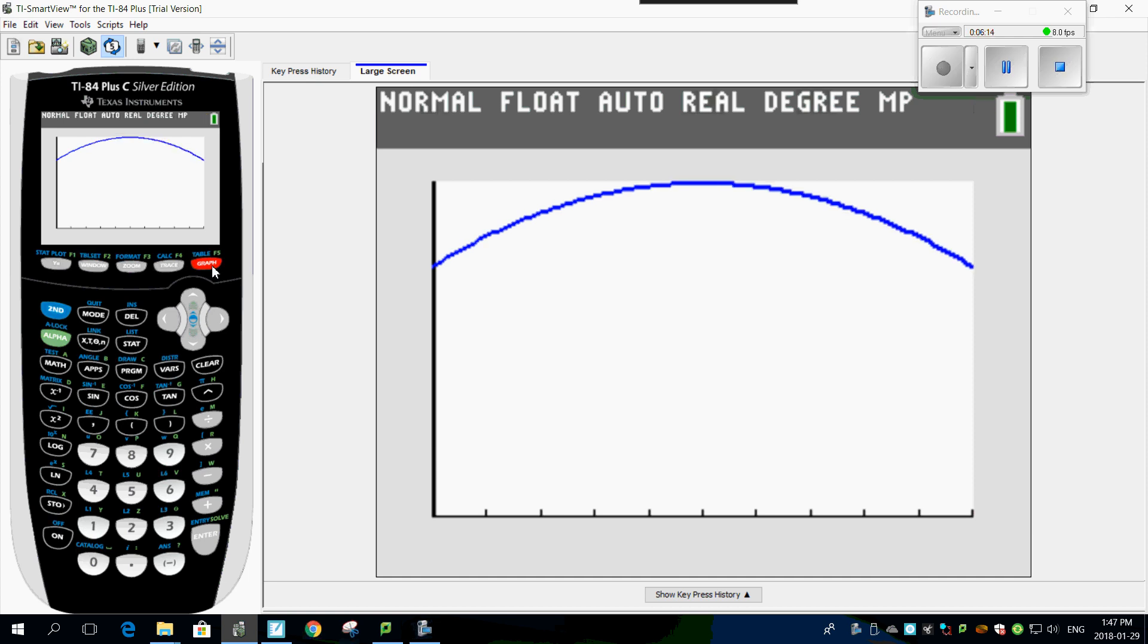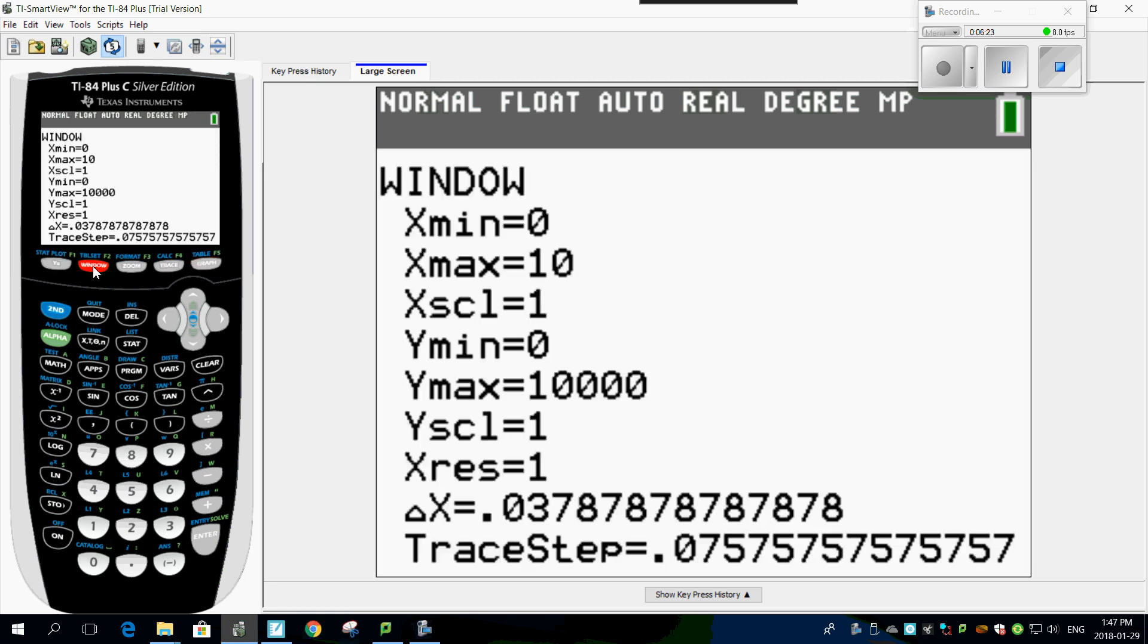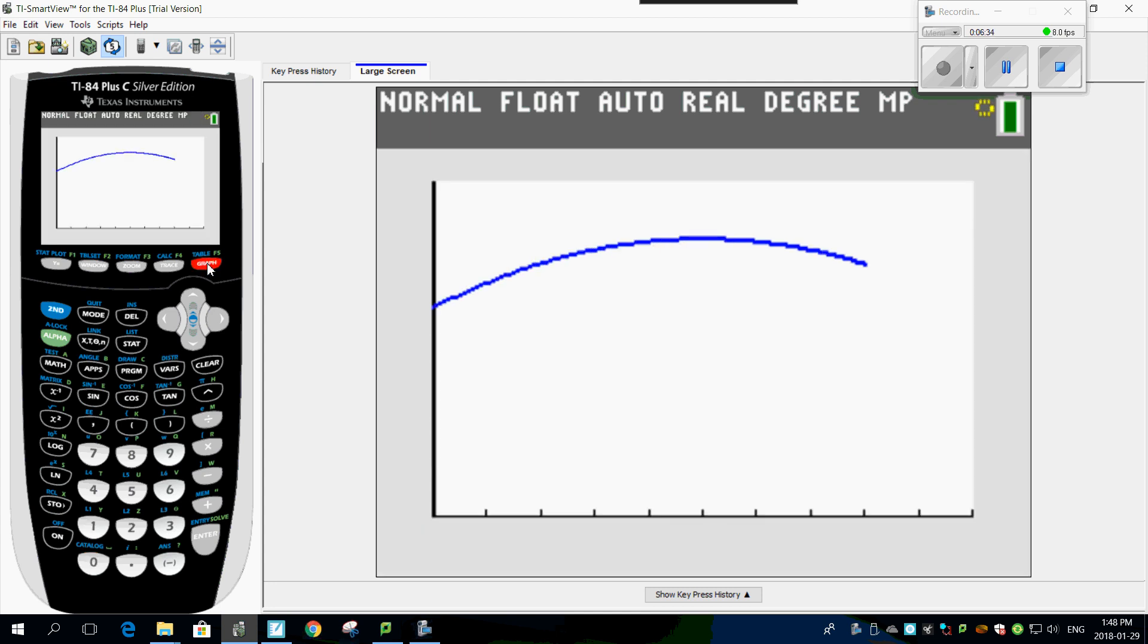Look at that. So I'm going to change my windows a little bit more because I want to see a few more values here. I'm going to take my window and I'm going to make it not 10,000, I'm going to make it up to about 12,000. That way I get to see that top value a little bit better. Now I'll graph it. There we go. Let's find the maximum.